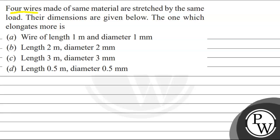Question number two: Four wires made of the same material are stretched by the same load. Their dimensions are given below. Wire A: length 1 meter, diameter 1 mm. Wire B: length 2 meter, diameter 2 mm. Wire C: length 3 meter, diameter 3 mm. Wire D: length 0.5 meter, diameter 0.5 mm. Which wire elongates the most?